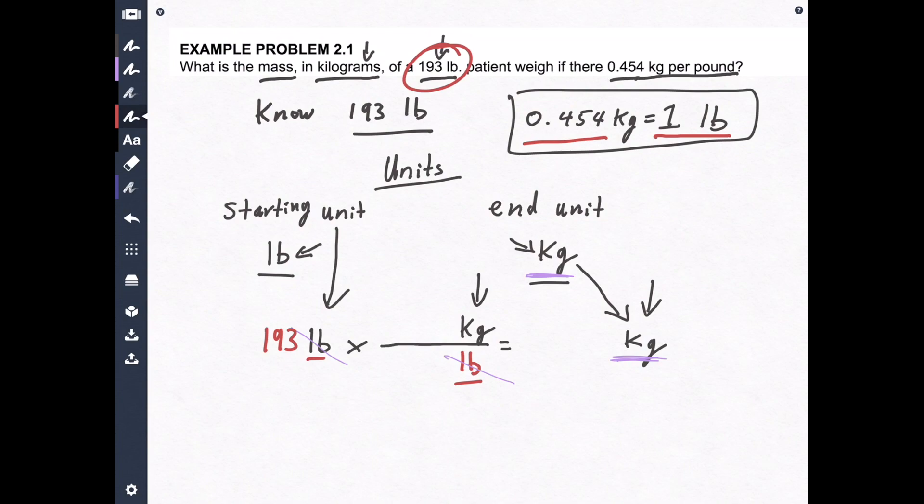I want you to think about this all the time. This number is married to that unit and they never separate. This number is married to this unit and they never separate. So when you're plugging these numbers in, this number goes with the kilogram. So the 0.454 goes with the kilograms. Because they're married.